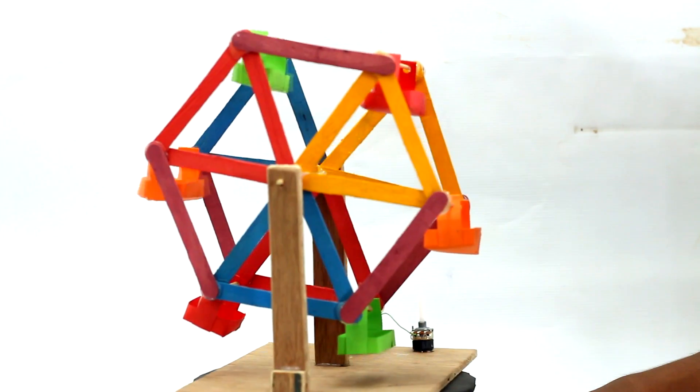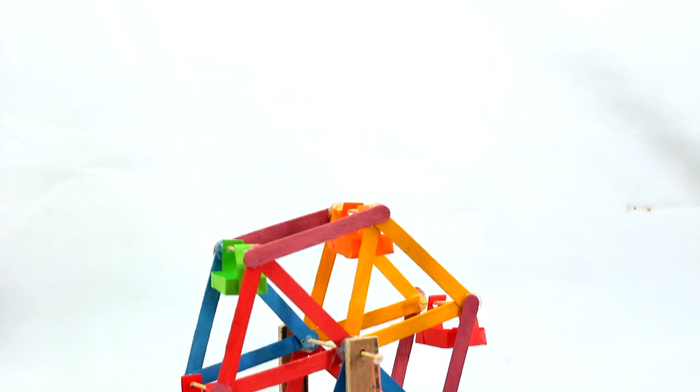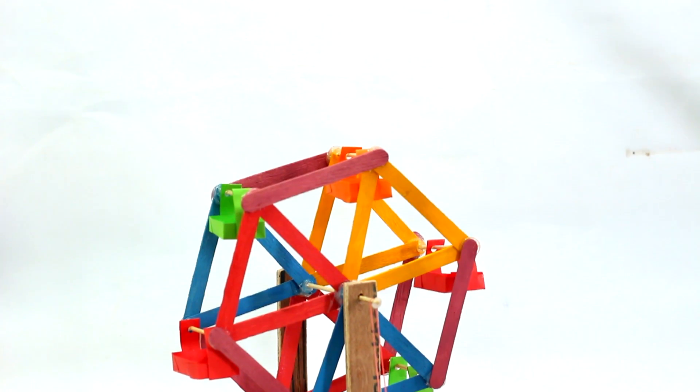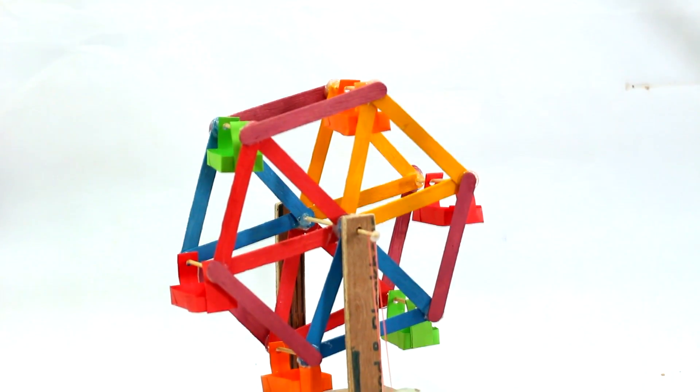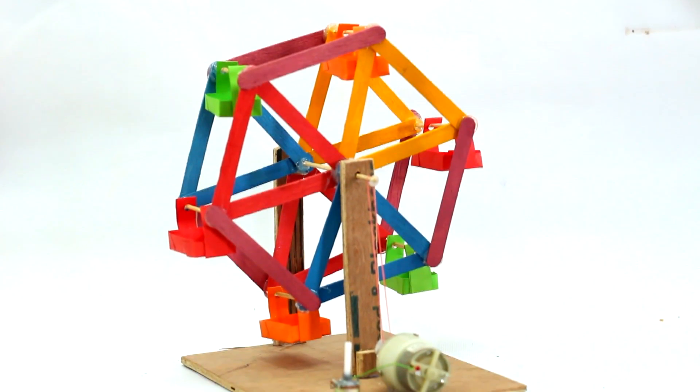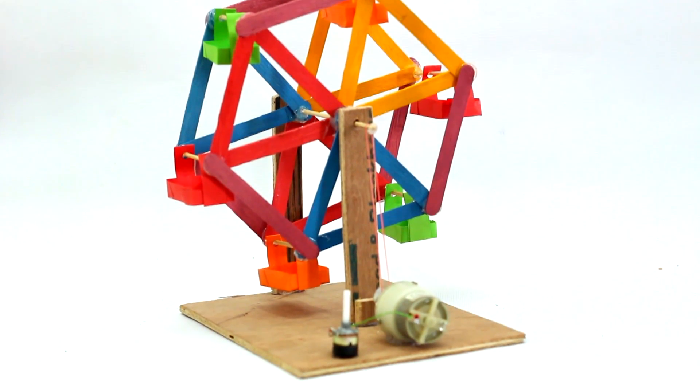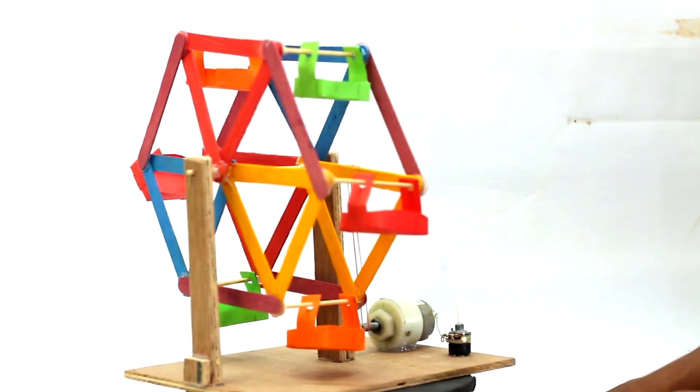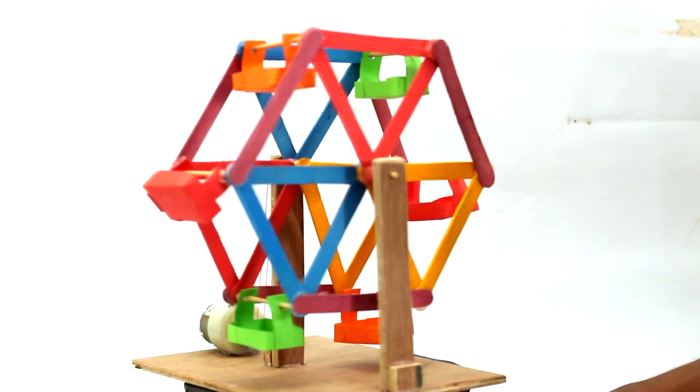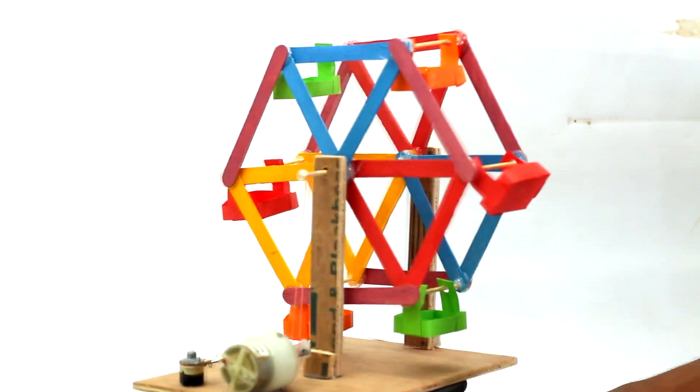This ferris wheel can be easily made at your home with some basic materials and also can be used to demo at your school science projects or fairs. I have used a potentiometer in this project that controls the speed of rotation, fast or slow. If you are a student then this project can be a great idea for your science project.